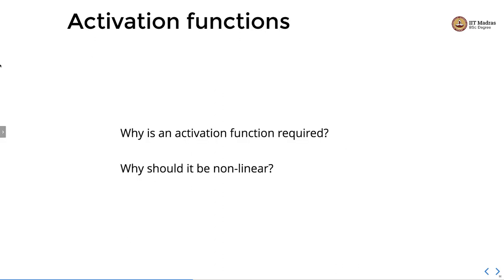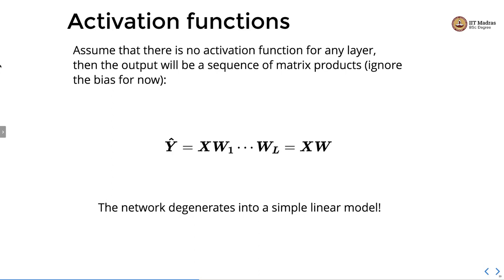Let us understand why an activation function is required and why it must be non-linear. Assume there is no activation function for any layer; then the input will go through a sequence of matrix products. Ignoring bias for simplicity, Ŷ = X · W1 · W2 · ... · W^L, and all these weight products can be expressed as a single W. So we effectively have X·W, which degenerates into a simple linear model. This confirms that without non-linear activation, we simply get a linear model — as we saw in the TensorFlow playground.